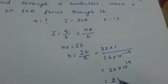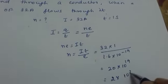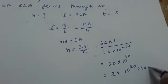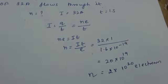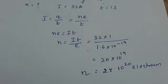So that can be written as 2 into 10 raised to 20 electrons. So the number of electrons is 2 into 10 raised to 20 electrons.